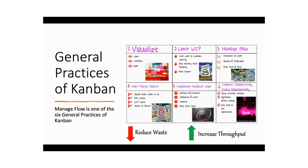The next general practice is implementing the feedback loop — it is the reviews and meetings. You can only improve once you reflect back on how you performed. Implementing feedback loops is the fifth general practice of Kanban. The sixth one is improve collaboratively and evolve experimentally — you find out improvement areas based on data collected from the work that you have done.